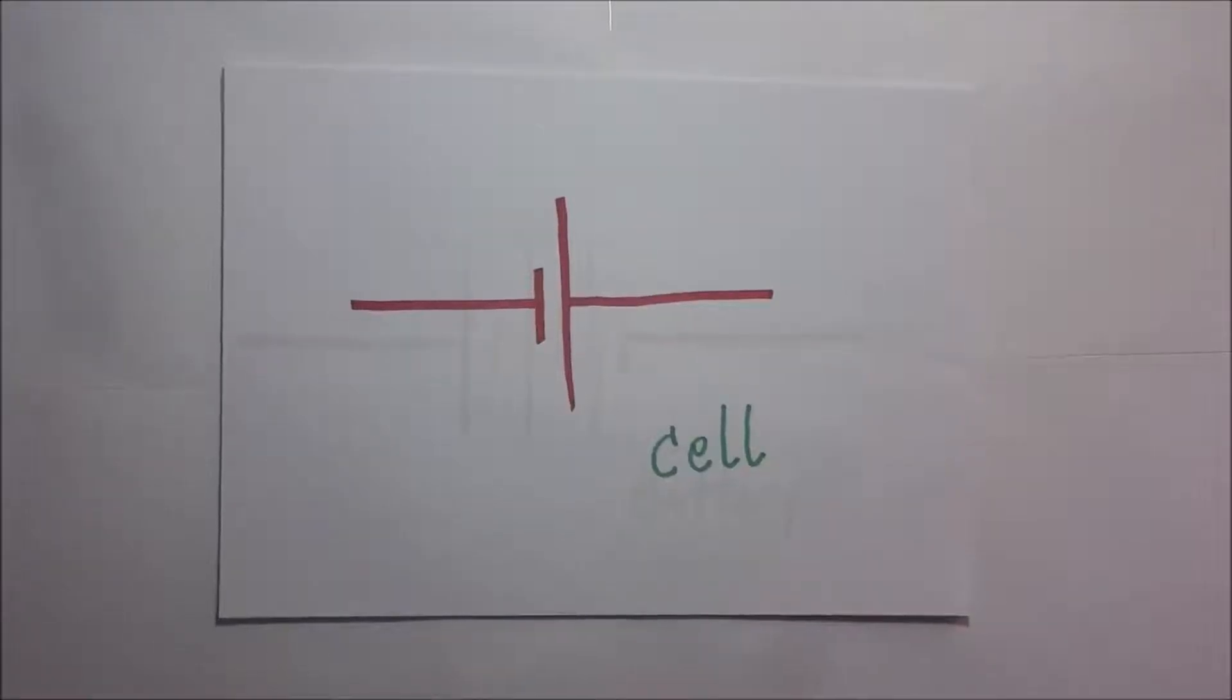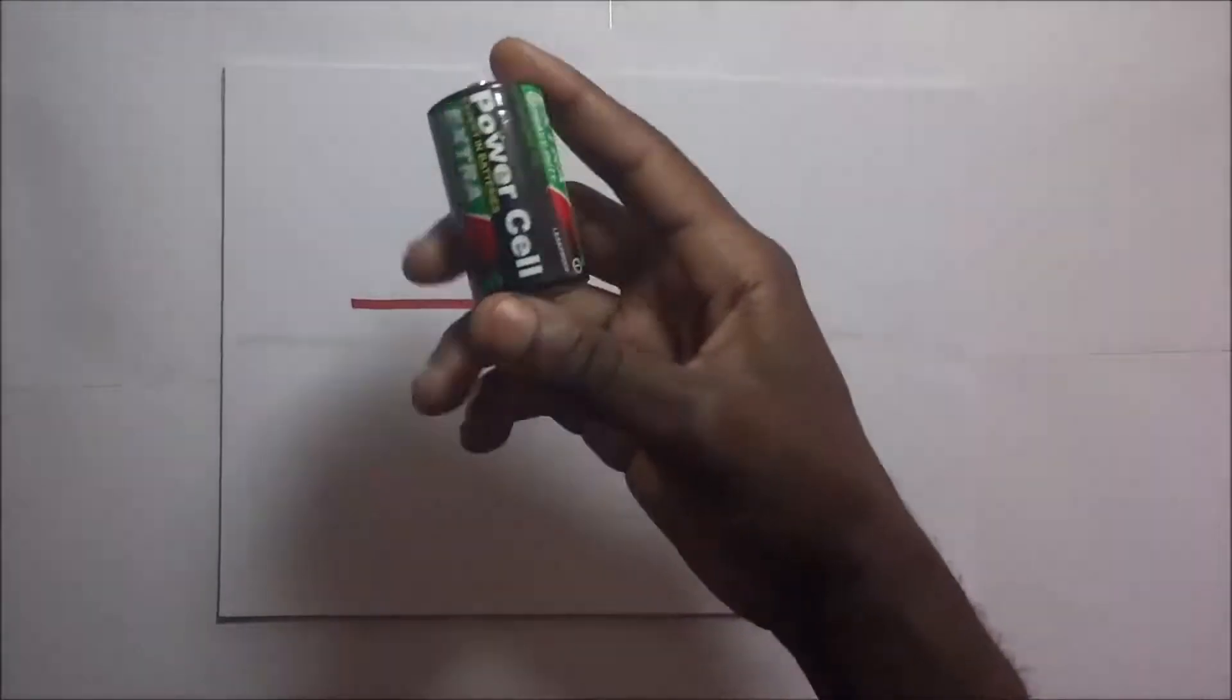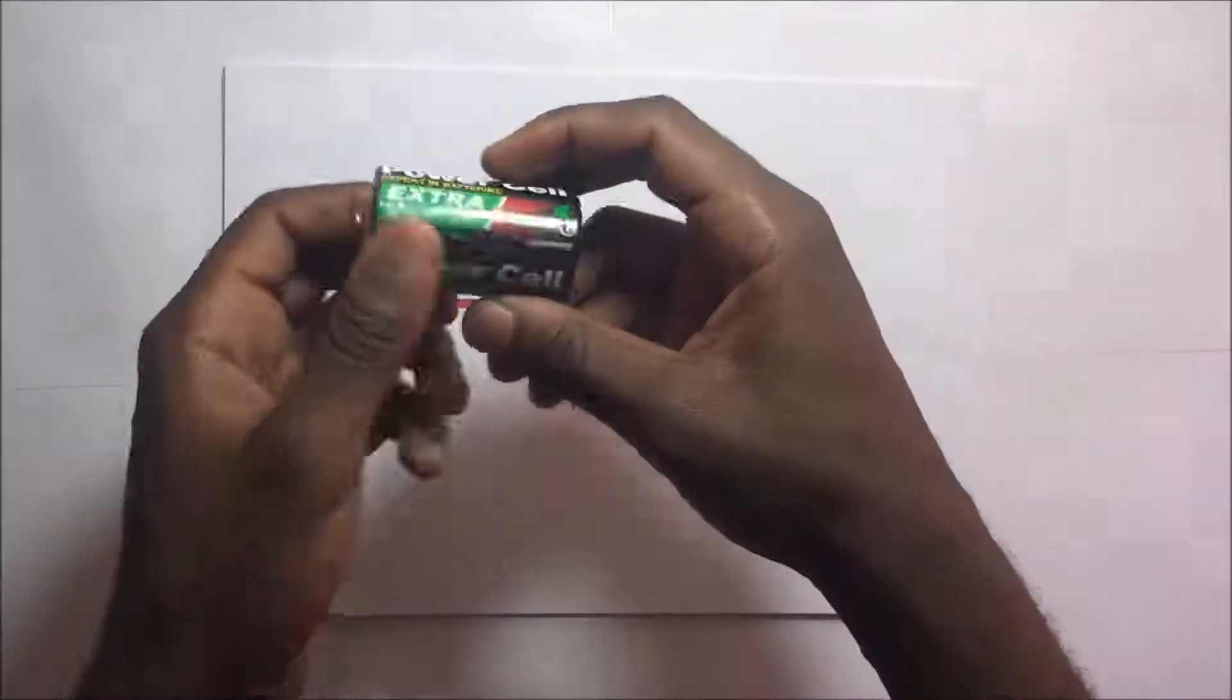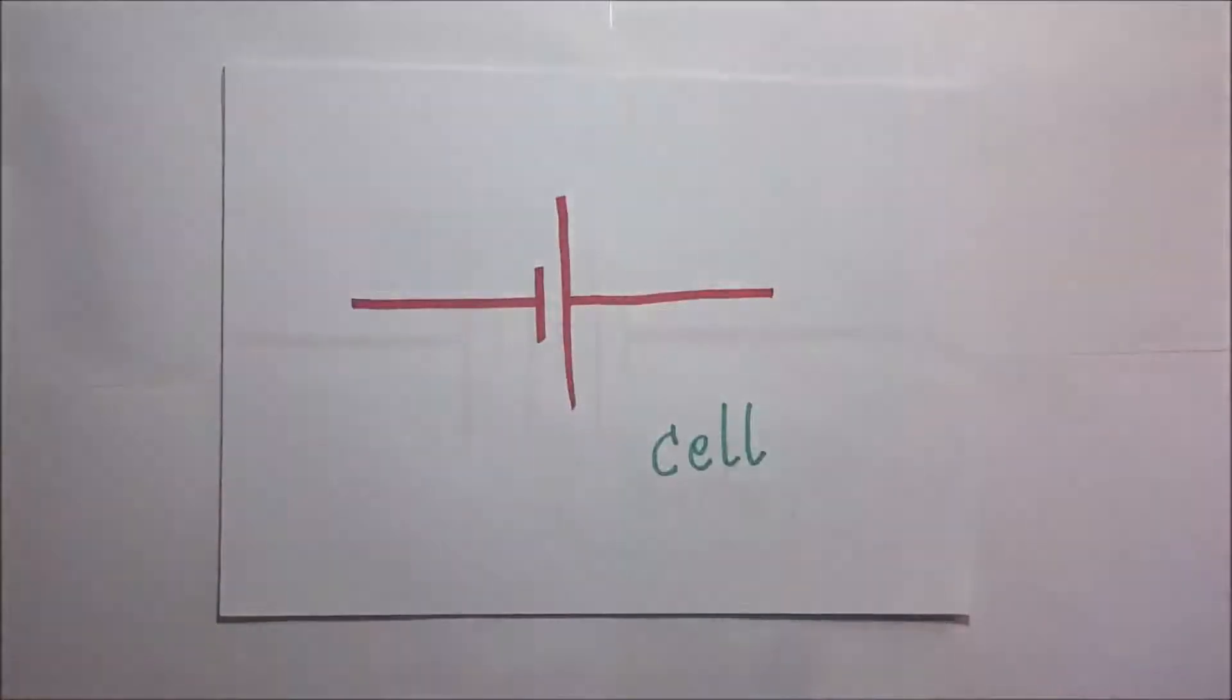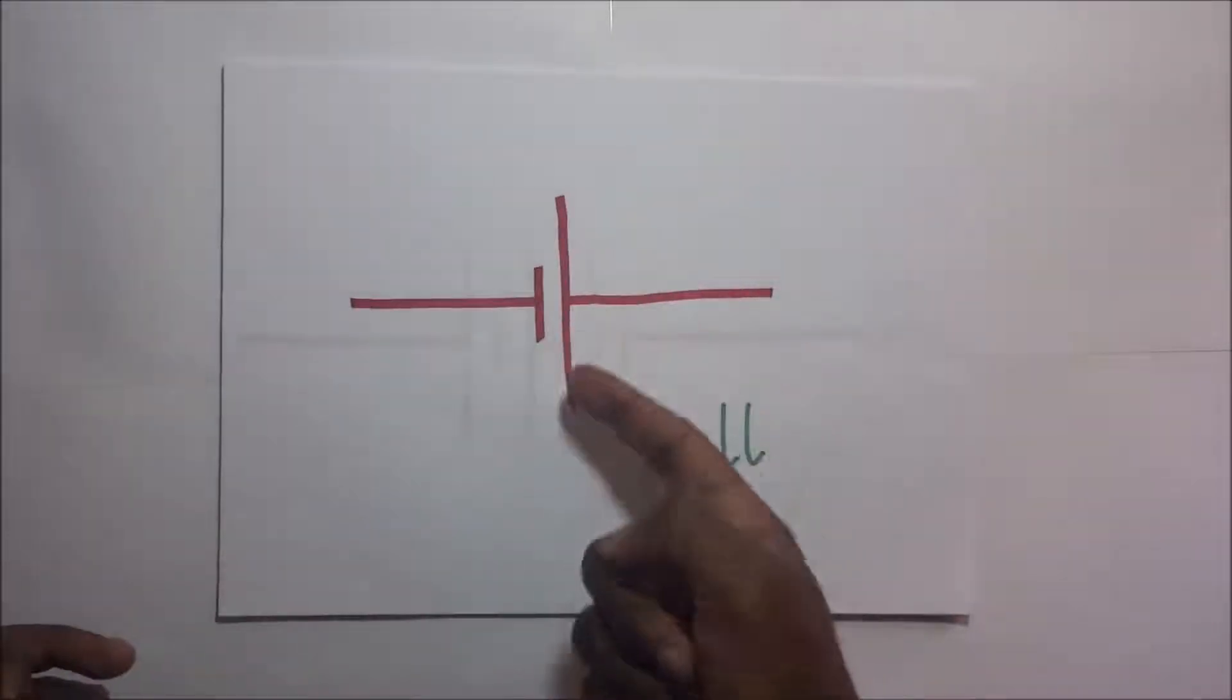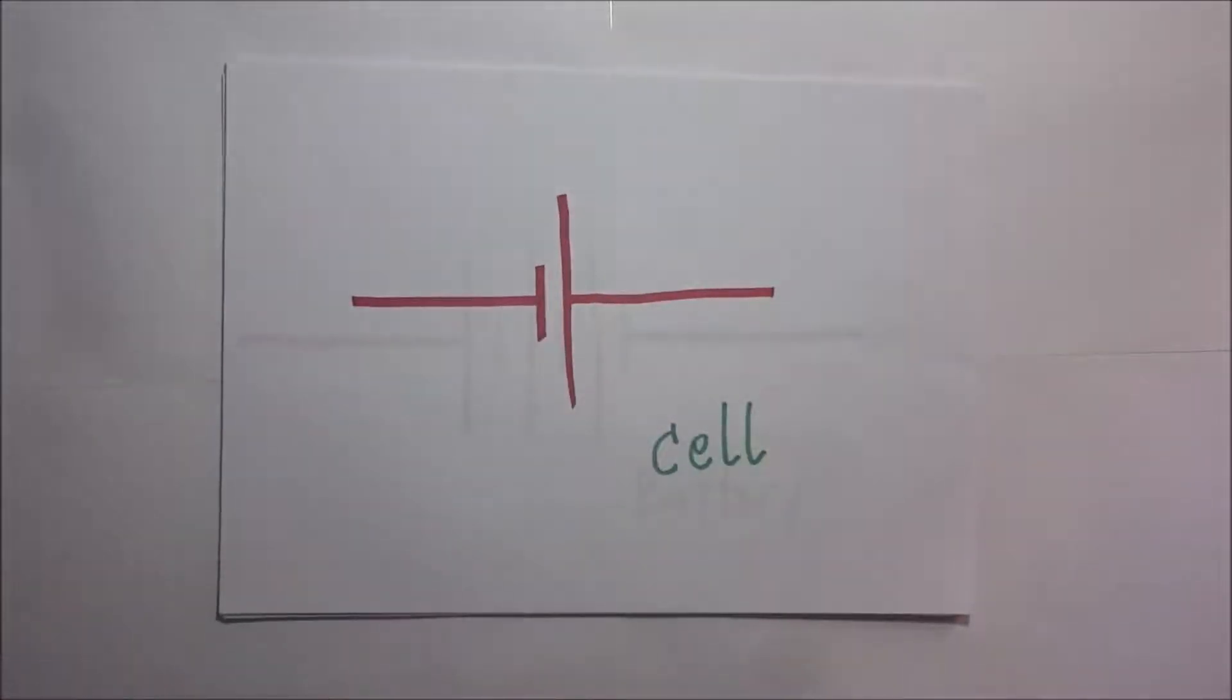In this video, we are going to look at the common electrical symbols that are used in most circuit diagrams. We'll begin with a cell. This right here is a cell with a positive terminal and a negative terminal. When we represent that cell diagrammatically, this is what we draw. The long line is the positive terminal and the short one is the negative terminal.